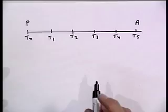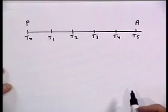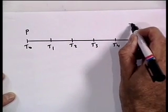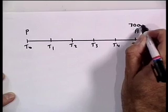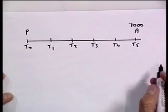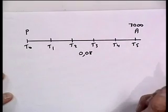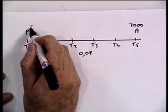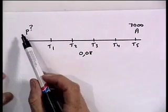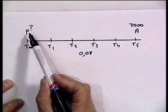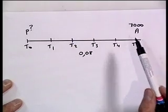I encourage you to draw timelines in financial maths. We know our current value of money is seven thousand Rand. It's over five years, and the interest rate is eight percent — divide by a hundred for the decimal. The question is: what was invested and saved back then? You'd agree it's going to be a smaller amount that grew to seven thousand Rand. We go back to the example and fill in the missing pieces.